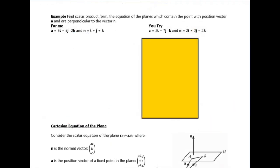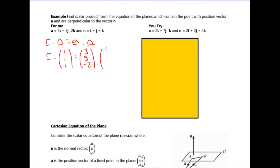In this example, we're given a point on the plane (3, 5, −2) and a normal vector (1, 1, 1). The equation of the plane is r dot n = a dot n, so I need to compute the right-hand side. Dot product: 3×1 + 5×1 + (−2)×1 = 3 + 5 − 2 = 6. So the equation of the plane is r dot (1, 1, 1) = 6.